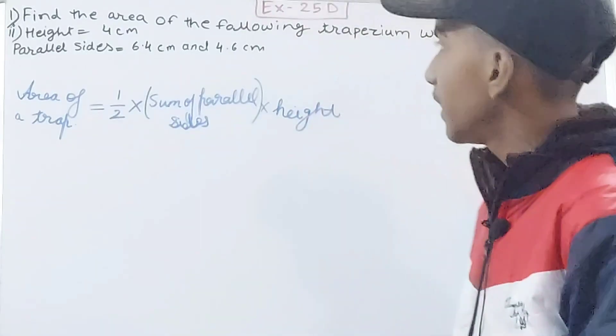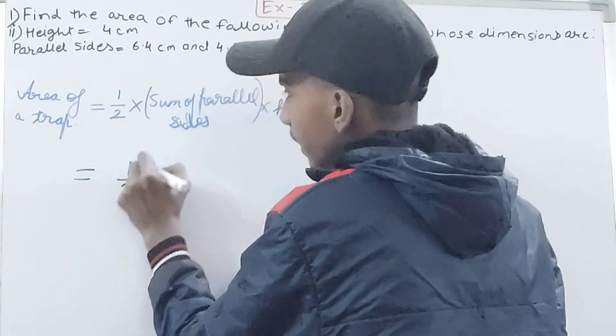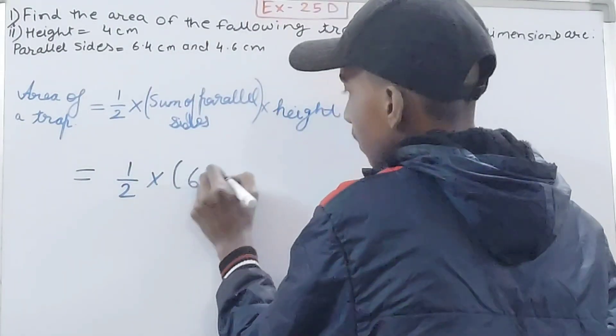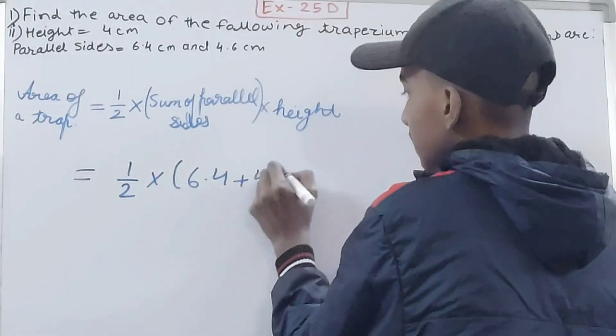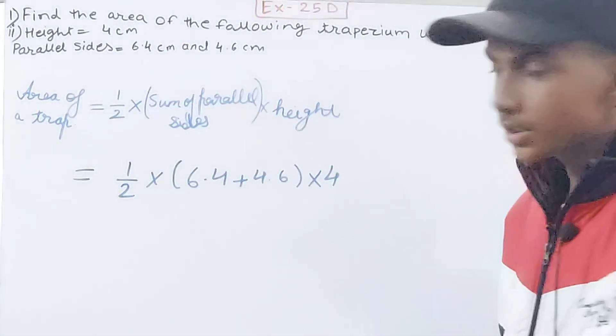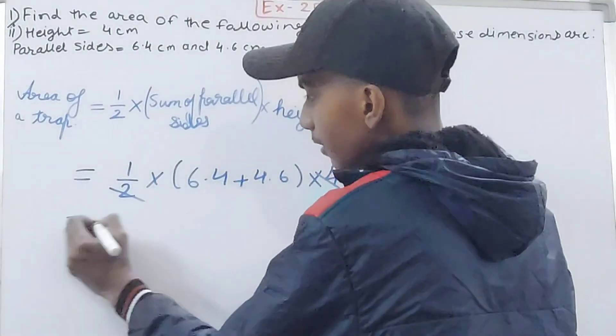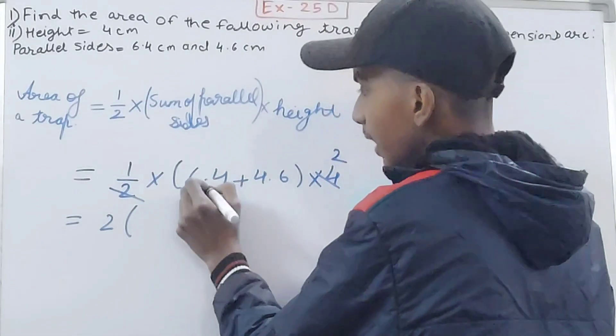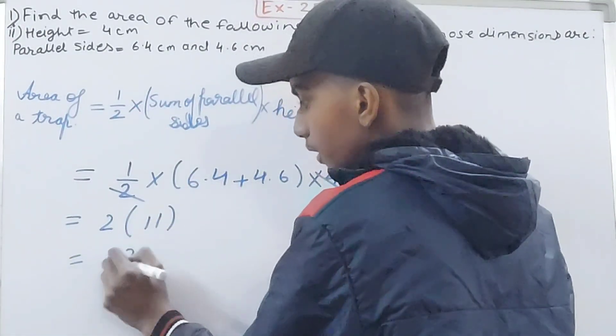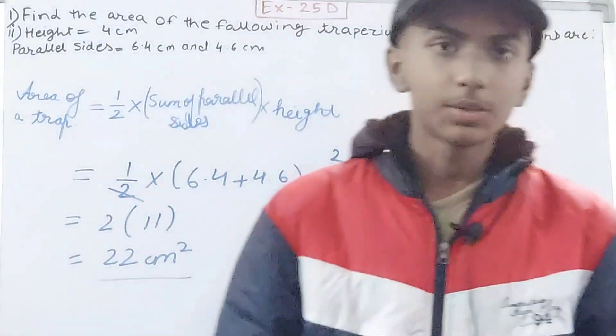Let's see the next part now. Same thing, we have to put the value. 1/2 multiply by sum of the parallel sides. We have 6.4 plus 4.6, multiply this by your height that is 4 centimeters. Solve, 2 and 4 I can cancel, so here I will be left with 2 multiplied by 6.4 plus 4.6 is 11. So you have 22 square centimeters as your area.